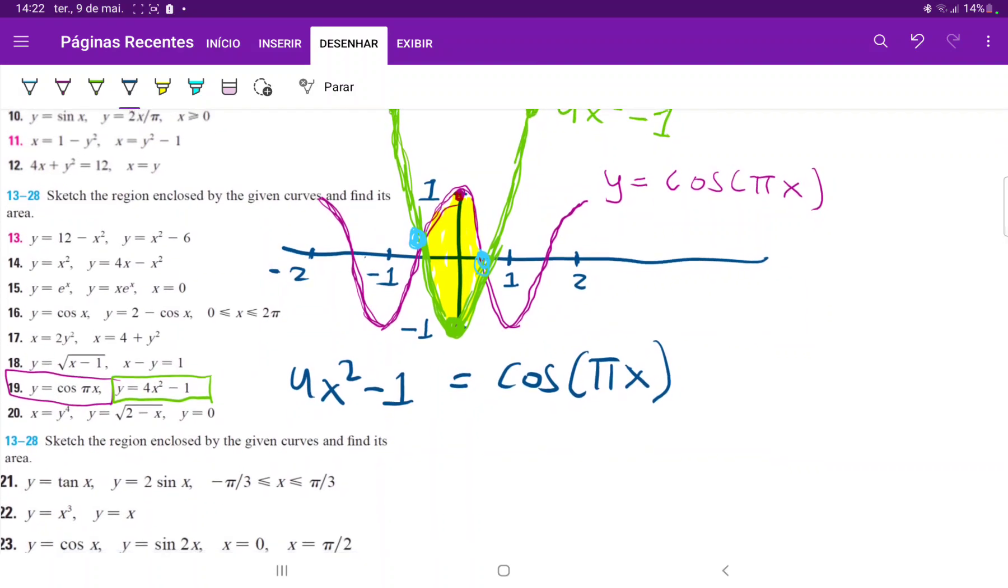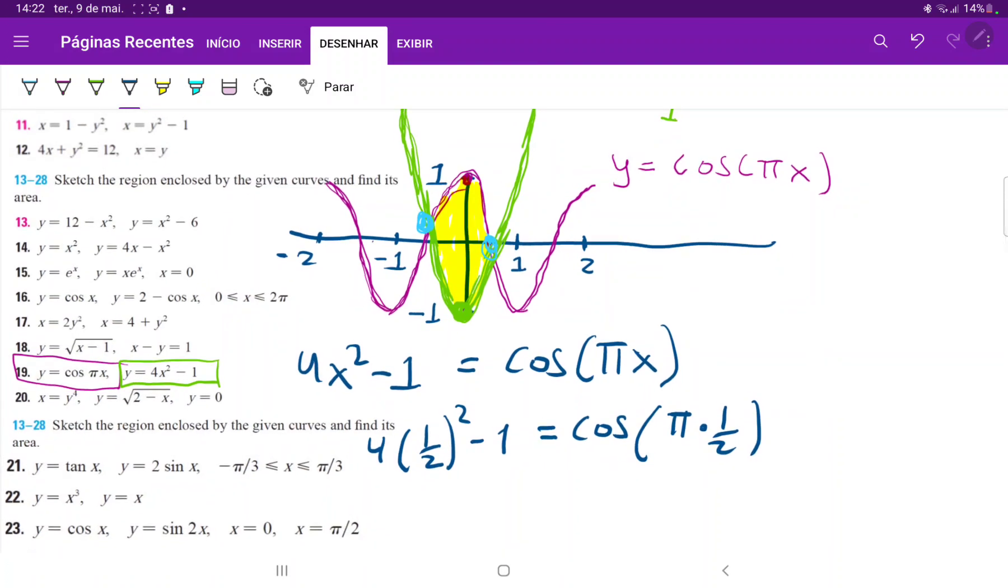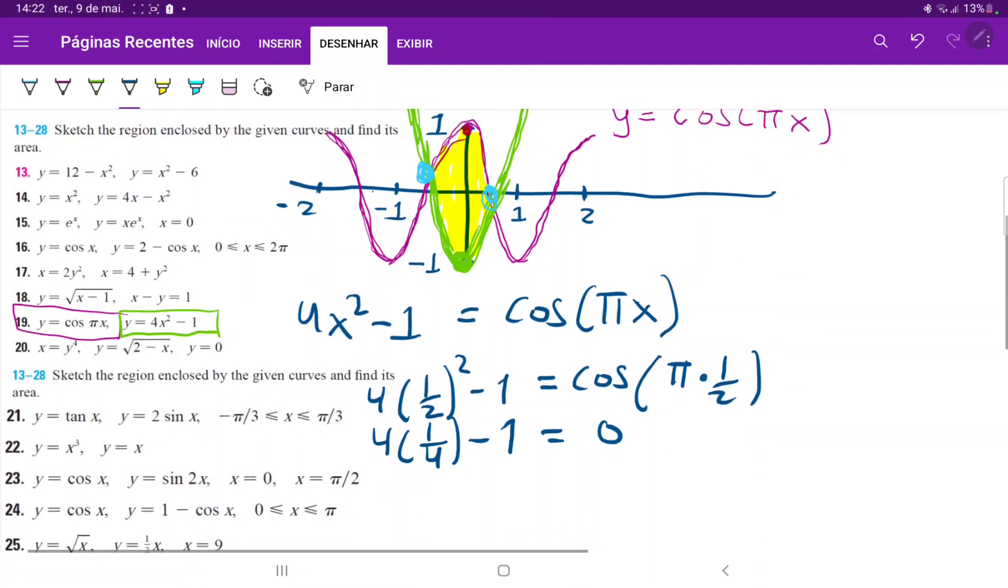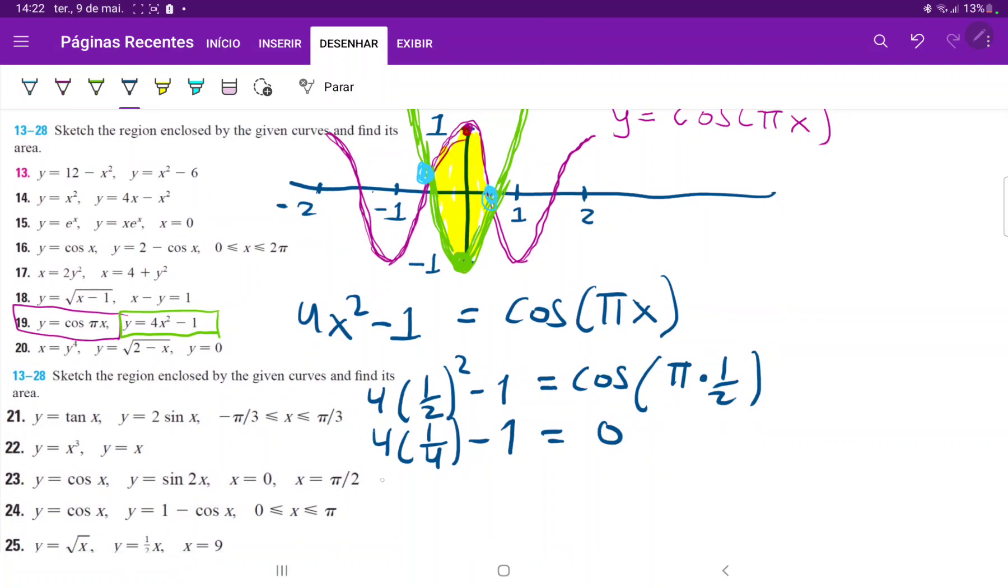If x equals plus or minus one half, we have 4 times one half squared minus 1 equals cosine of π times one half. One half squared equals one quarter times 4, so 4 times 1 over 4 minus 1 equals 0. Cosine of π over 2 is 0. Let's check: 1 minus 1 equals 0, 0 equals 0. It checks out.